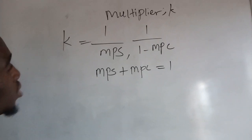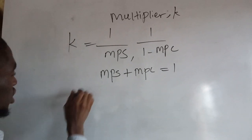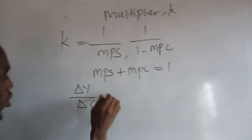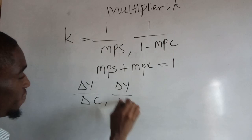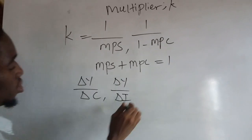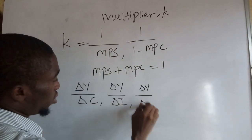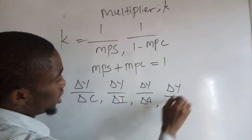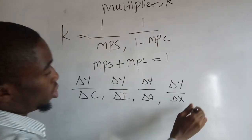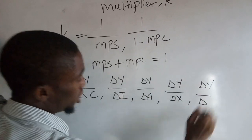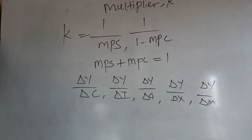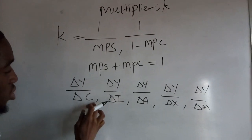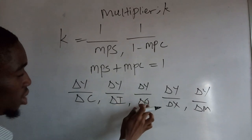Also, the multiplier can be calculated as change in income over change in consumption, or change in income over change in investment, or change in income over change in government expenditure, or change in income over change in exports, or change in income over change in imports.